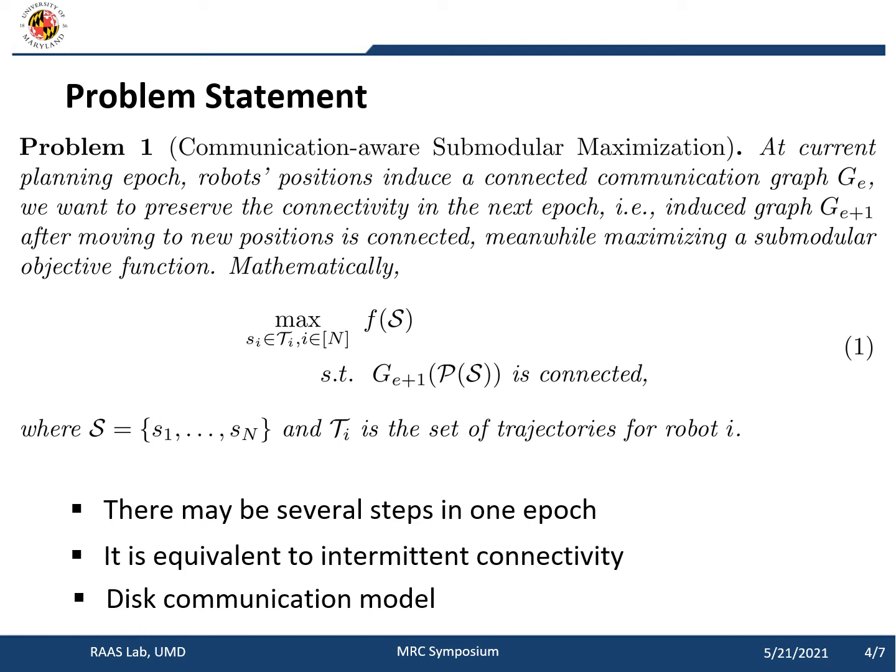The formal statement of our problem is that, at the current planning epoch, the robots' positions induce a connected graph. We want them to form another connected graph when they move to the new position in the next planning epoch, meanwhile maximizing a submodular objective.